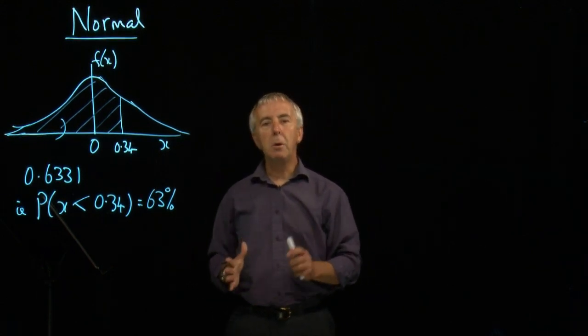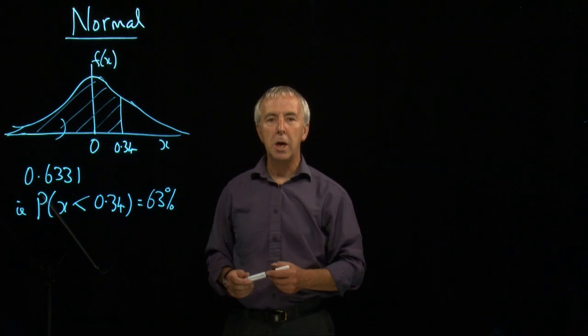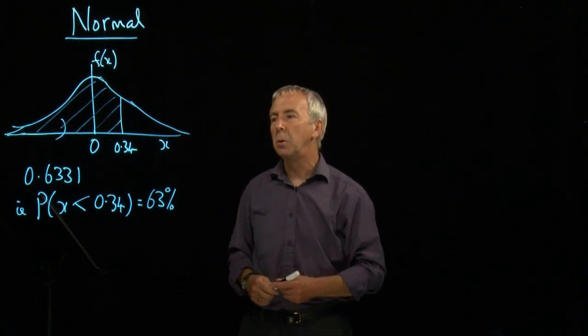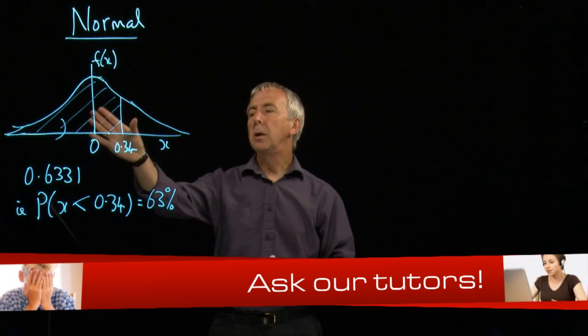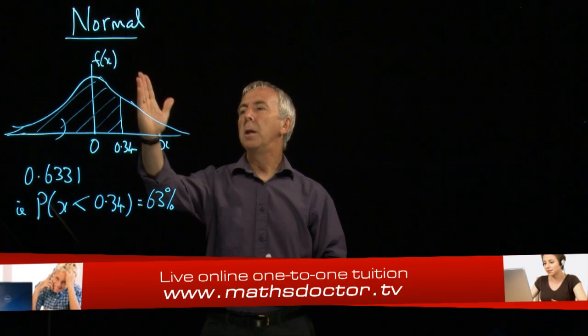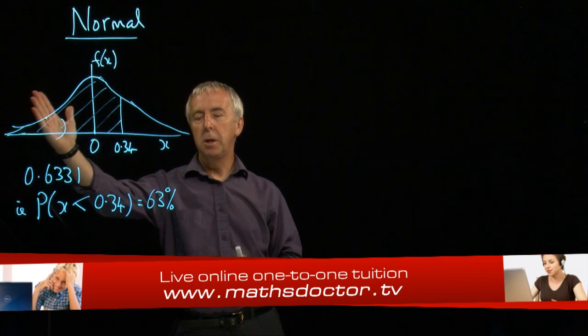So you need to be able to look up normal distribution tables. In any statistical book this axis is sometimes called z and you look up the value of z and then it will tell you the area to the left.